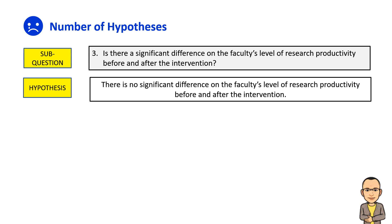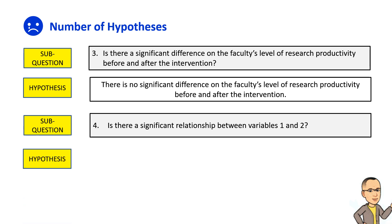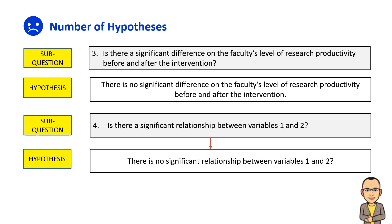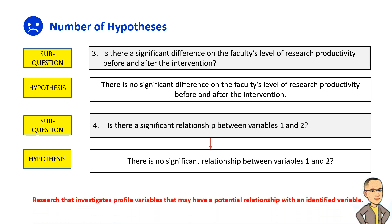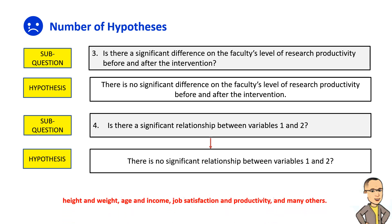The number of hypotheses depends on the number of inferential sub-problems. In cases where there is a sub-problem such as a relationship between variable 1 and variable 2, it is necessary to create another hypothesis — a restatement of sub-problem 4 into a declarative sentence: 'There is no significant relationship between variables 1 and 2.' The test of relationship or correlation is typically included in research that investigates profile variables that may have a potential relationship with an identified variable. For example, educational attainment and the number of research conducted. Some variables that can be correlated include height and weight, age and income, and job satisfaction and productivity.